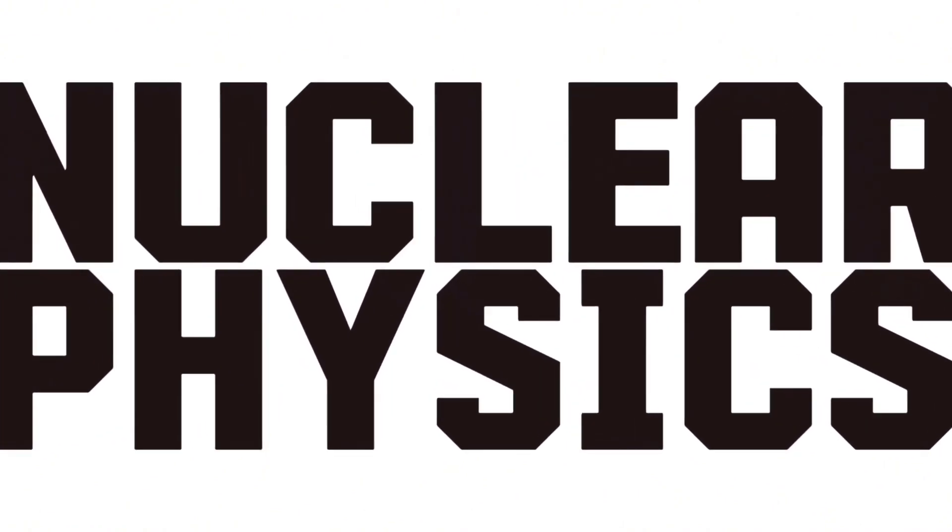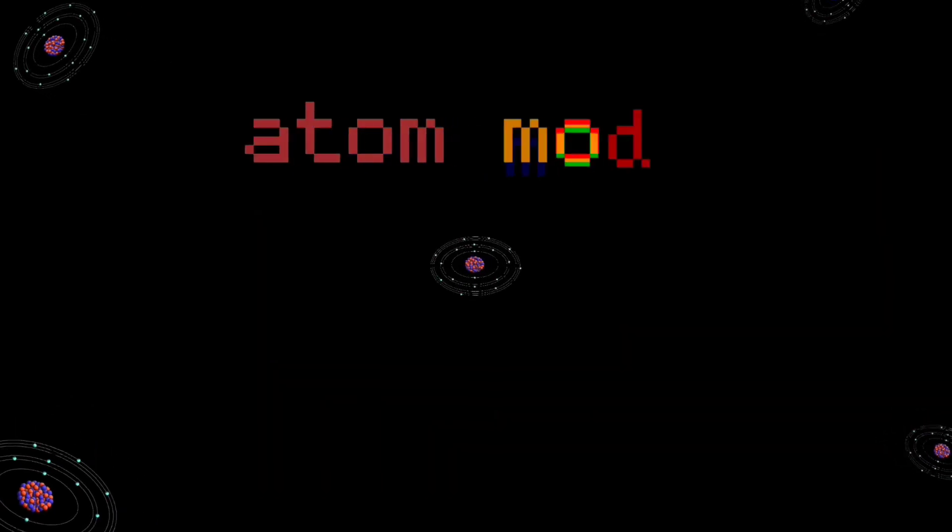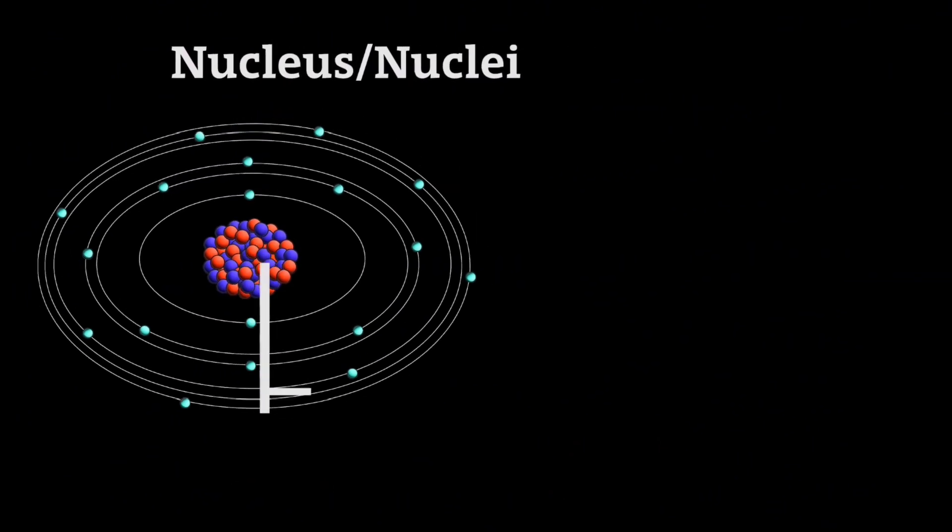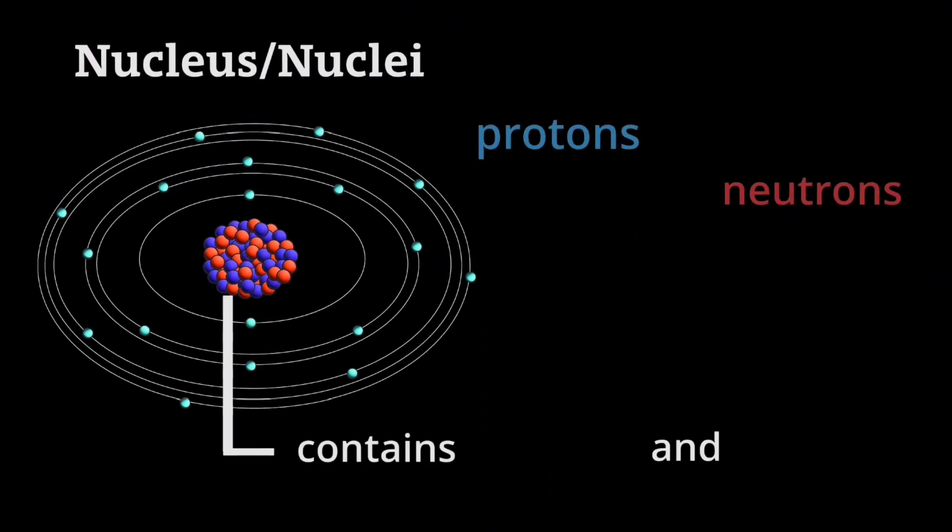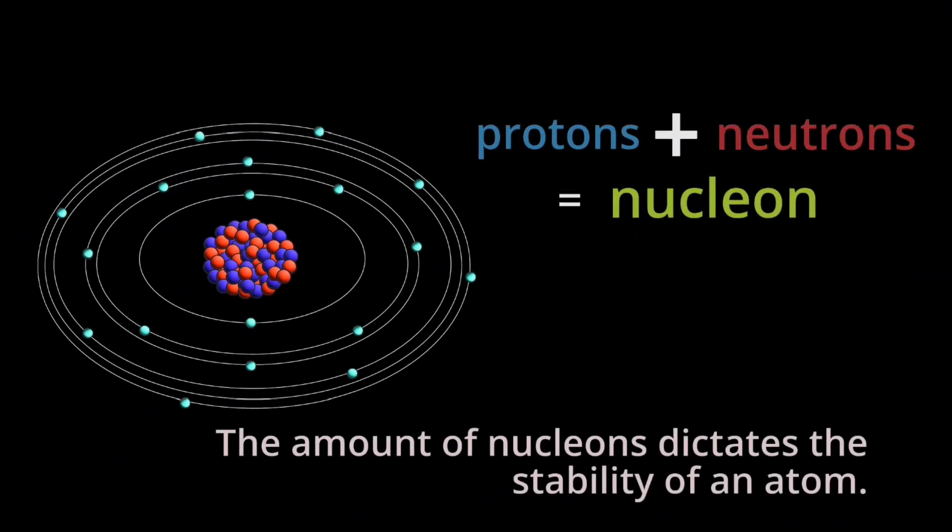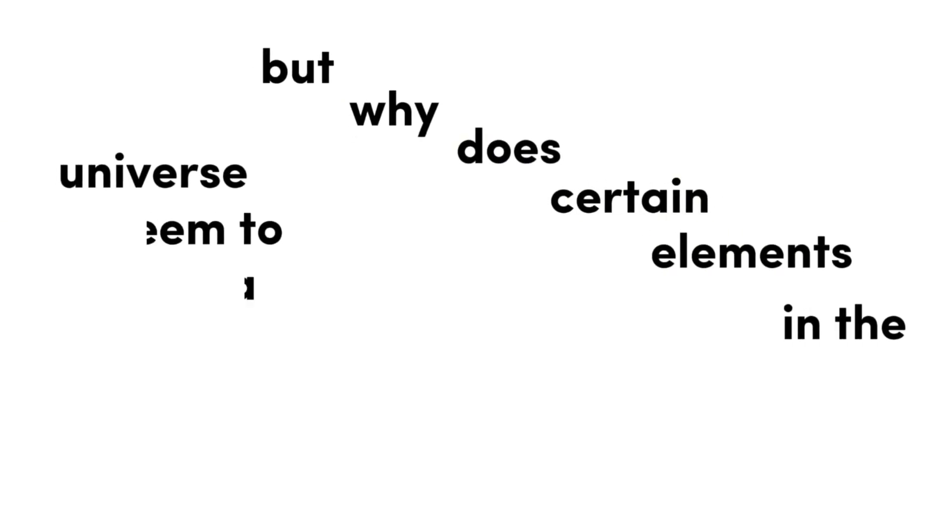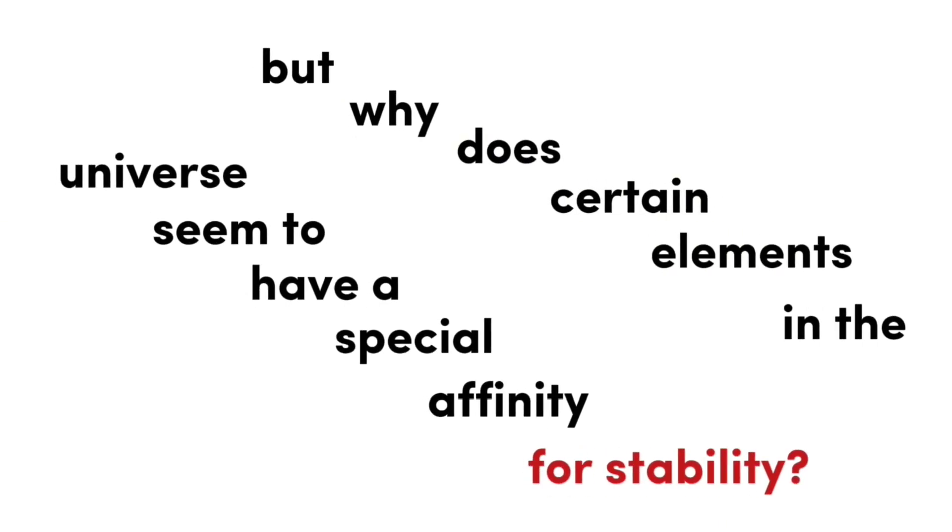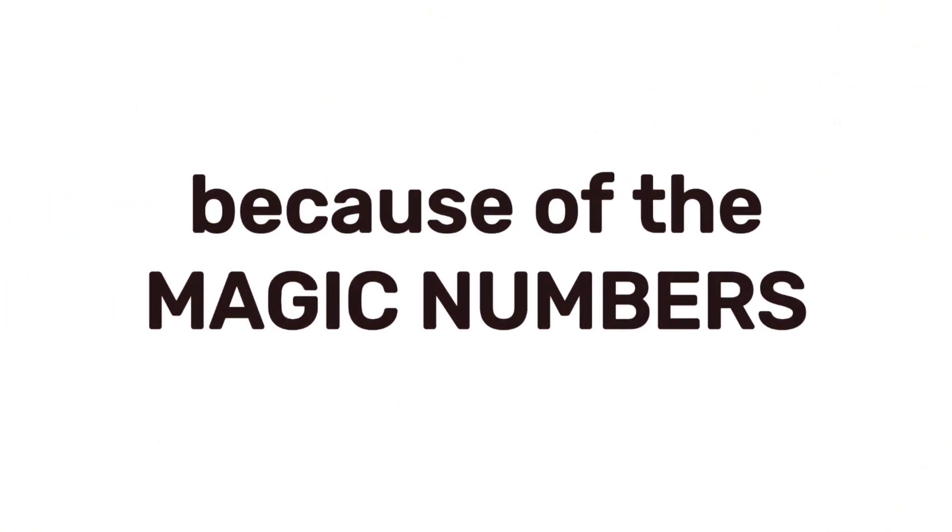When we talk about nuclear physics, we look at the nuclei of an atom. Nuclear contains nucleons. The amount of nucleons dictates the stability of an atom. But why do certain elements in the universe seem to have a special affinity for stability? Because of the magic numbers.